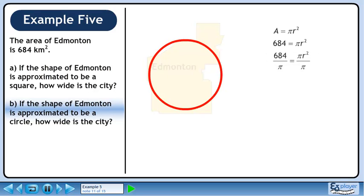Divide each side of the equation by pi to isolate r squared. We now have 684 over pi equals r squared. Now take the square root of each side. The value for r is the irrational number 14.75 continuing.